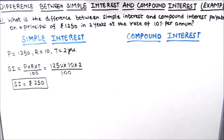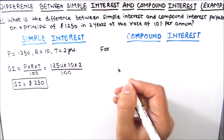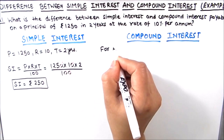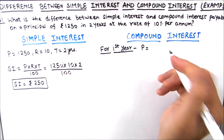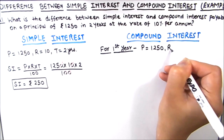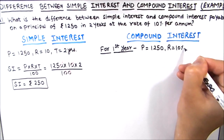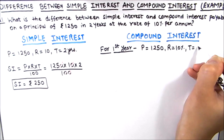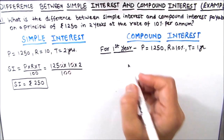Now let's find the compound interest without using the formula. For that, we are going to use the formula for simple interest and find the interest for the first year. For the first year, the principal amount will be 1250, rate of interest is 10%, and time will be one year because we are finding it for the first year only.